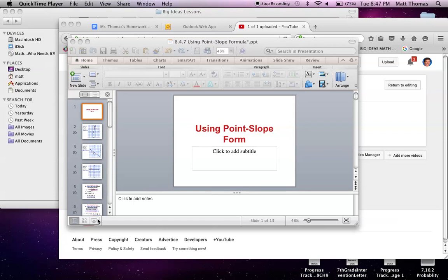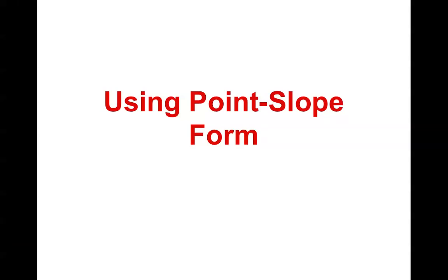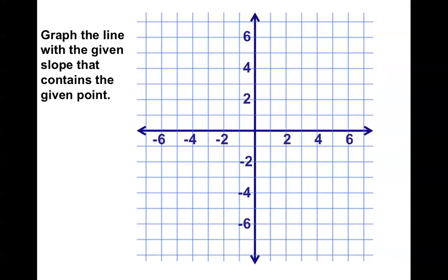Hey everyone, welcome back. All right. So using point-slope form, we've discussed how you can make an equation if you know where the line crosses the y-axis and you know the slope of the line. Very easy. But what if I have only a point, any point, not just where it crosses the y-axis, but any point? Well, let's check it out.